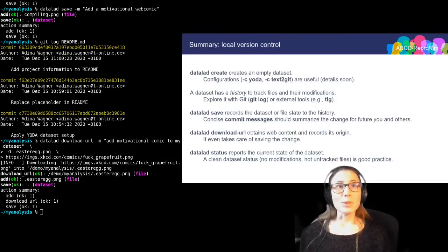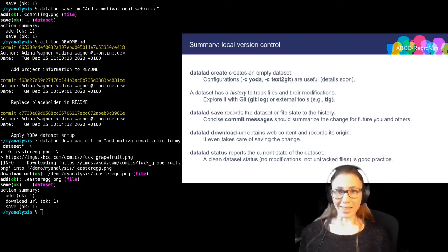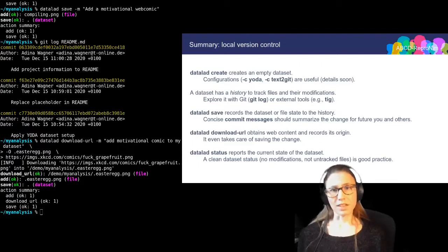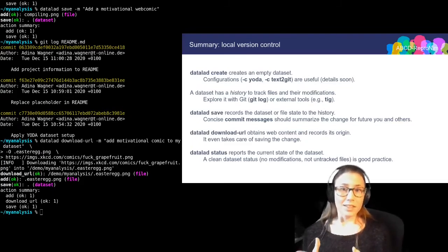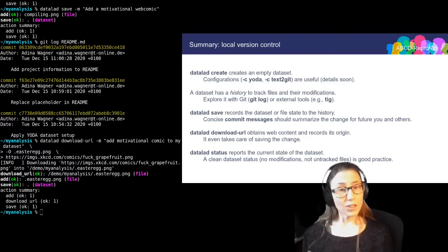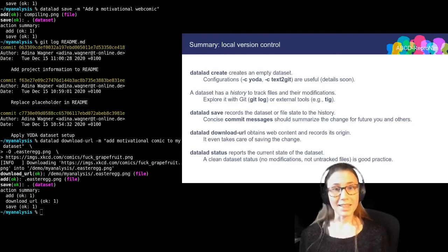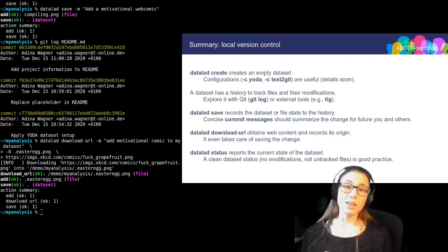Let me quickly summarize what has happened so far. You can create a DataLad dataset with datalad create. There are procedures such as Yoda that are useful. A dataset builds up a Git history, and tools like TIG or git log can be used to explore and interact with this history. DataLad save records the dataset or file state into history — this does version control with fewer commands than Git. You could also use Git commands in DataLad datasets.